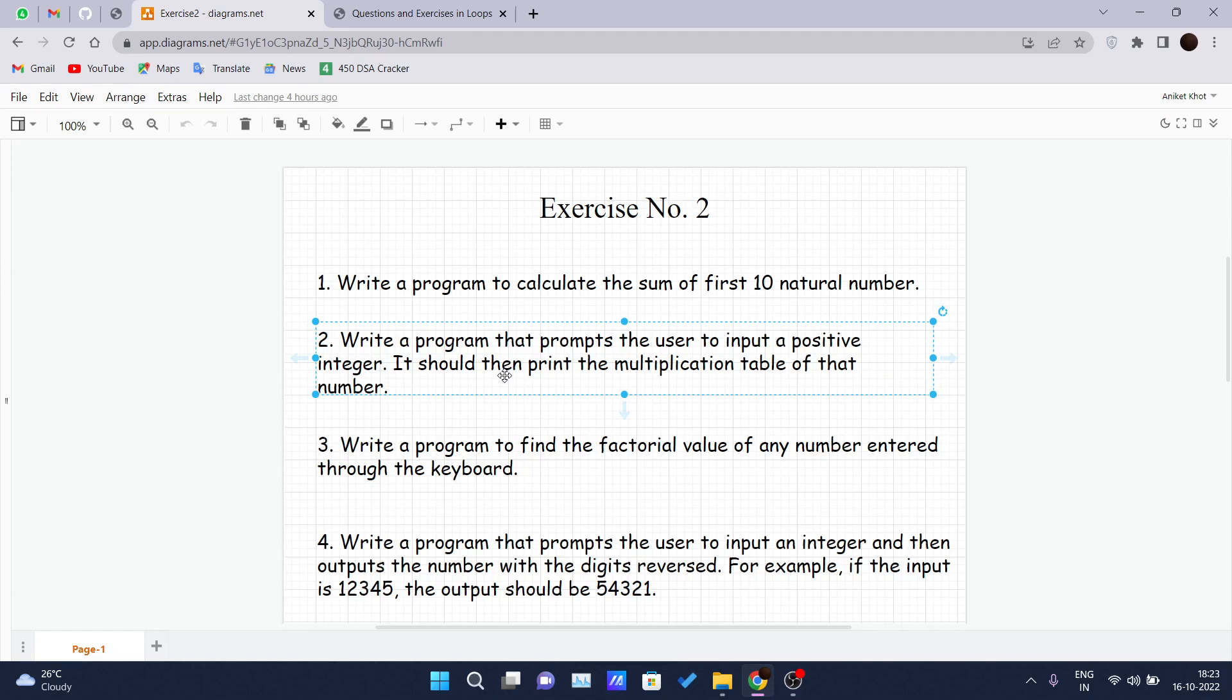The third one is: write a program to find the factorial value of any number entered through the keyboard. You have to take input from the user and, based on that input, give the output as the factorial value of that number.